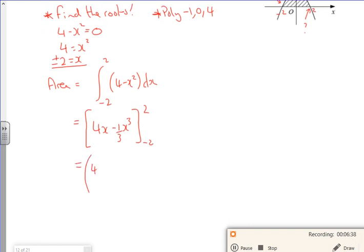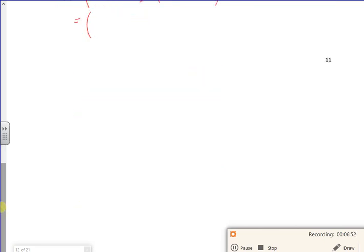Sum my numbers in, so I've got 4 lots of 2 minus a third 2 cubed, then 4 lots of minus 2 minus a third minus 2 cubed.